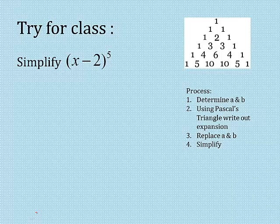I want you to try one here. X minus two to the fifth power. Remember to find the right level of the triangle. Use A's and B's. Write out your expansion. Replace A's and B's. And then simplify. Try it. And we'll see you in class.